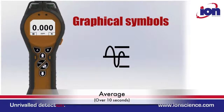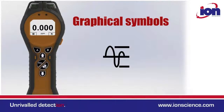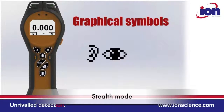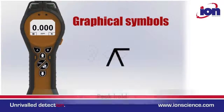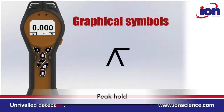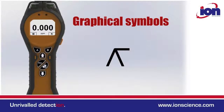Average: this gives an average reading over a 10-second period. Stealth mode: this disables audio and visual alarm indicators, so it avoids causing panic if you are in a public place. Peak hold: when selected, the highest measured reading is held on the display.